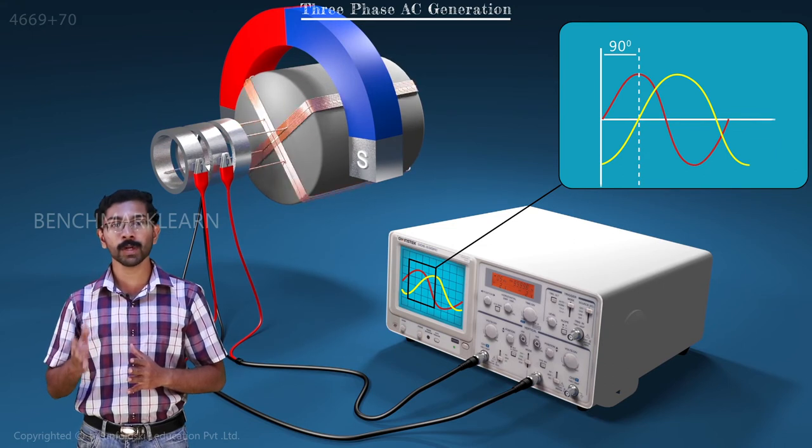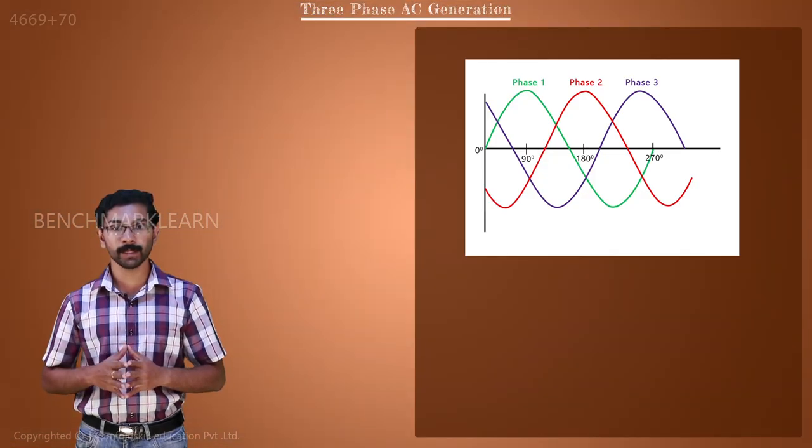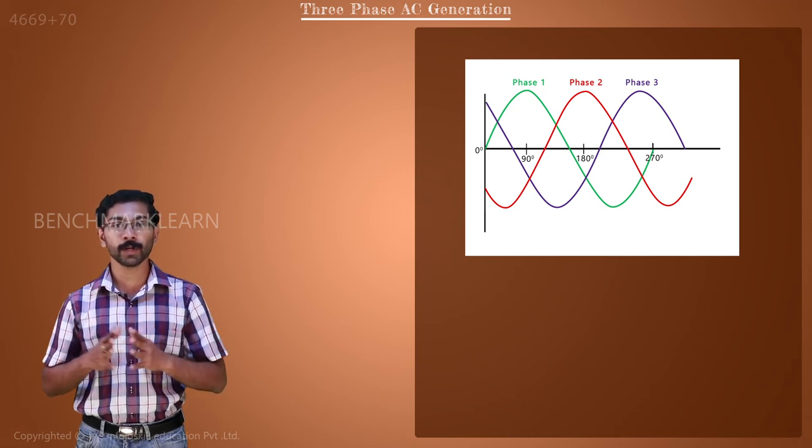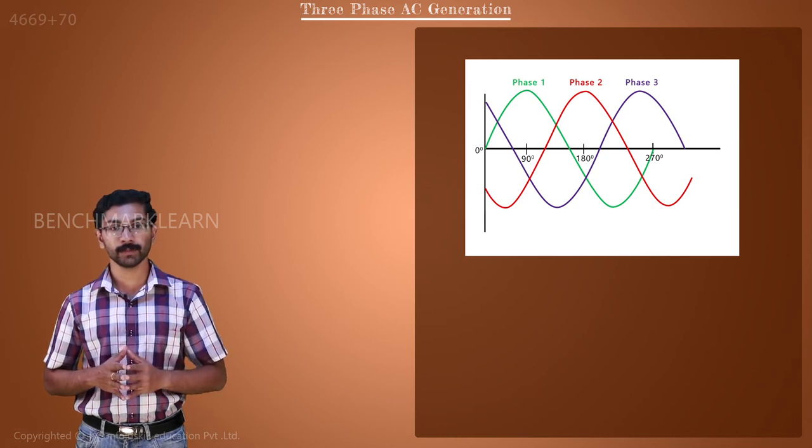In three-phase AC, we generate three sine waves that are equally spaced from one another. One complete cycle of an AC is 360 degrees.